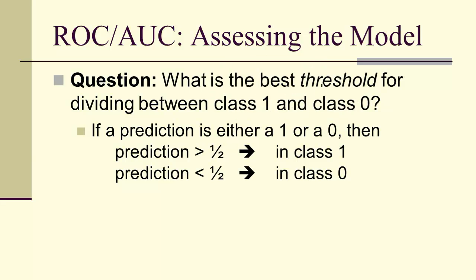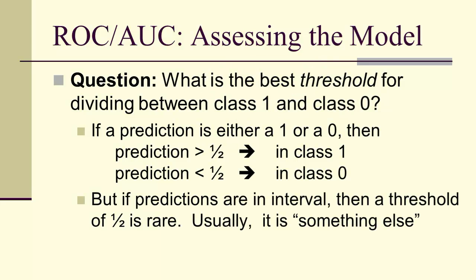But if the predictions are in an interval, then it's rare that a threshold of 1 half would be what we use. Typically, we tend to use something else.